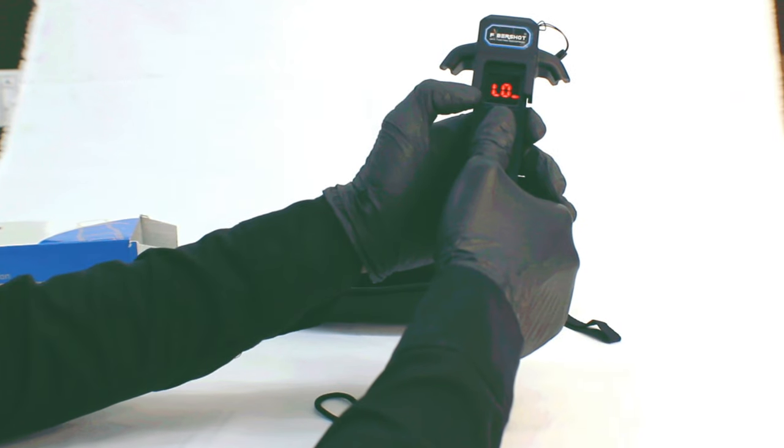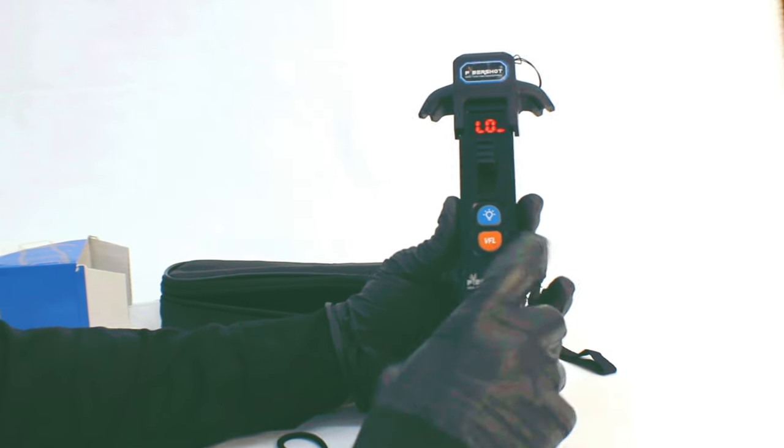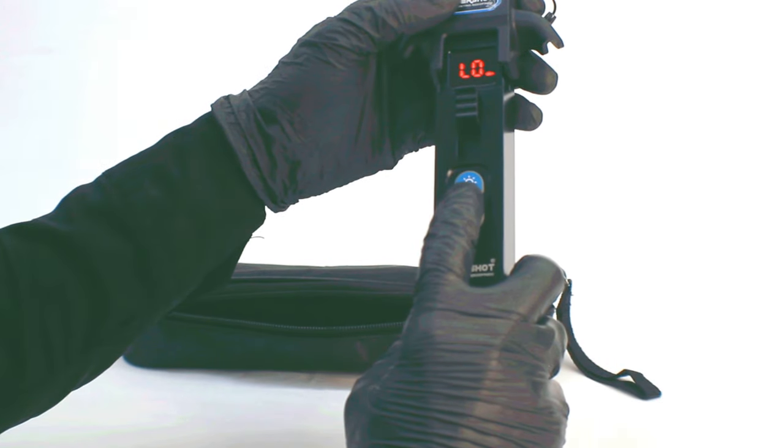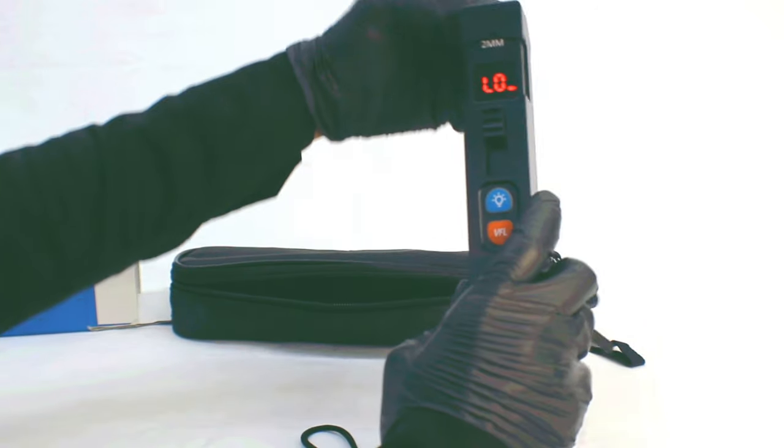As you can see, after pushing the lever button, it turns on and it comes with the inbuilt feature of VFL and a torch. There are two dedicated buttons representing VFL and the torch.